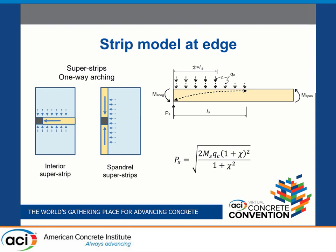At an edge column, we can also have spandrel strips running along the free edge of the slab, loaded on one face. They all share the same equation of equilibrium — all have the potential for a negative moment at the column end, a positive moment at the remote end, and loading from both sides. If loaded from one side only, chi times L sub s has chi equal to zero; if loaded from both sides, chi equals one. This is simply equilibrium of an arch — no more.